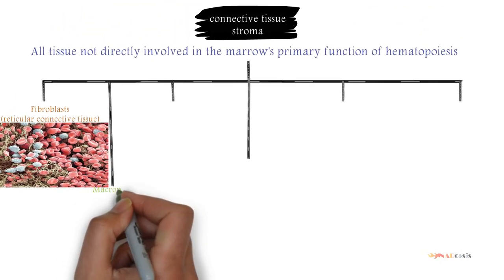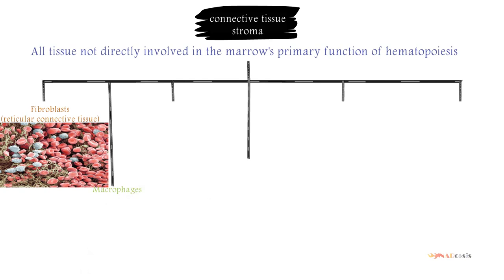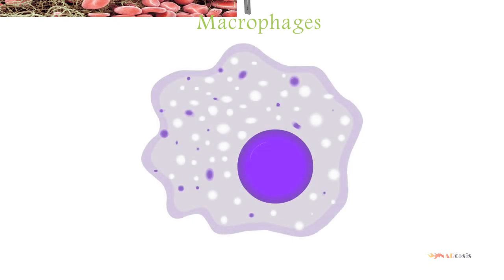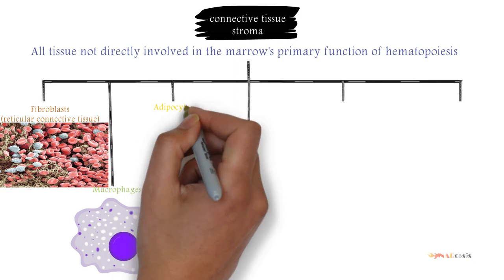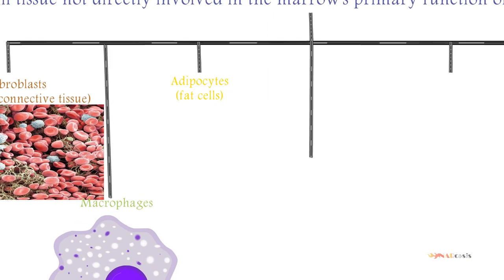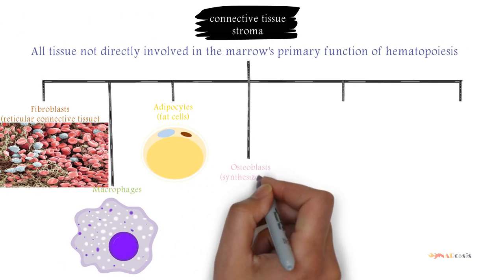The second component of stroma is the macrophage cells which contribute especially to the red blood cell production as they deliver iron for hemoglobin production. We have the adipocytes or the fat cells, and the osteoblasts which synthesize the bone, and the osteoclasts which resorb bone, and finally the endothelial cells which form the sinusoid cells.